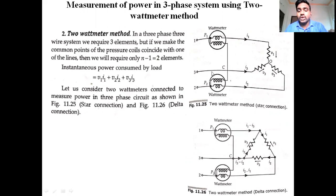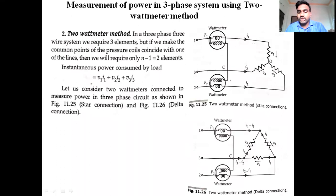We considered only two wattmeters — one wattmeter here and one wattmeter there. This is a star connected load and this is a delta connected load. We connected the common point on line 3.